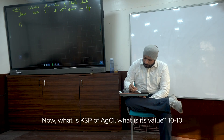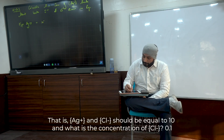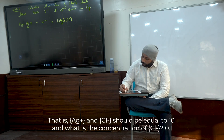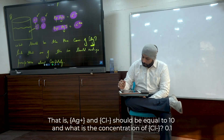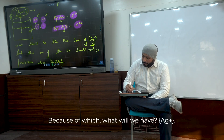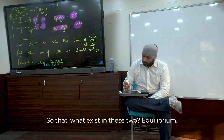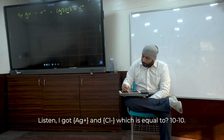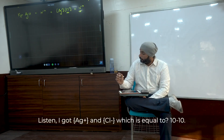Now, what do you think? For AgCl equilibrium: Ag⁺ times Cl⁻ equals Ksp. How much is that value? Ksp(AgCl) = 10⁻¹⁰. The concentration of Cl⁻ is 0.1M. So the maximum Ag⁺ concentration to maintain equilibrium — Ag⁺ times Cl⁻ equals 10⁻¹⁰.